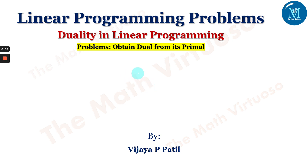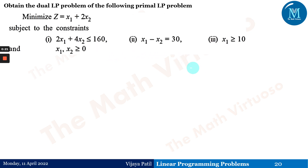Hello and namaste. In continuation with the linear programming problems, we have started with duality in linear programming. After detailed discussion on duality and constructing rules for building the dual from the primal, we are going ahead with problems. Obtain the dual from its primal: minimize Z equals x1 plus 2x2, subject to constraints.